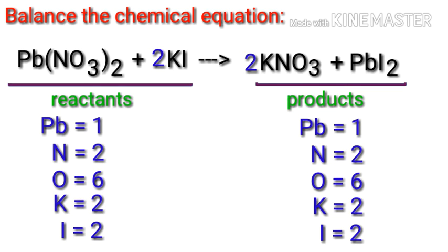The equation is now balanced. There are one plumbum atom, two nitrogen atoms, six oxygen atoms, two potassium atoms, and two iodine atoms on both sides.